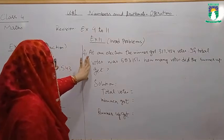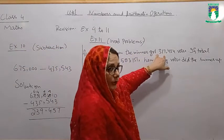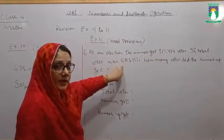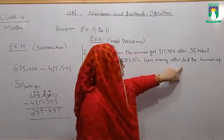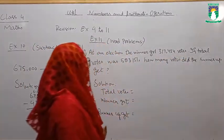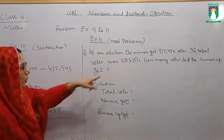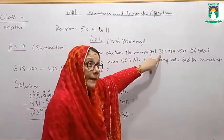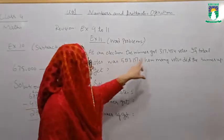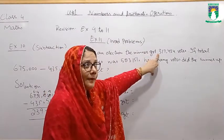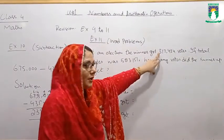They are saying election hua jiske andar jo banda jeeta uske itne votes the. Jabke total votes itne hain. Aap ye batao ki jo runner, jo second number pe aaya, uske itne votes the. Total given hai? Usme se ye given hai. Rest maang rahe hain. Jab total given ho aur uske saath ek value given ho, aap ko yaad rakhna hai, us question mein subtraction hai.